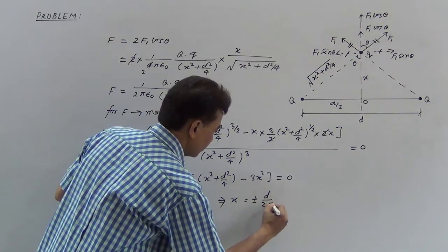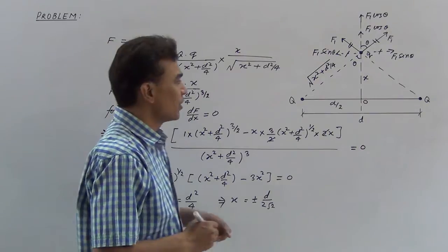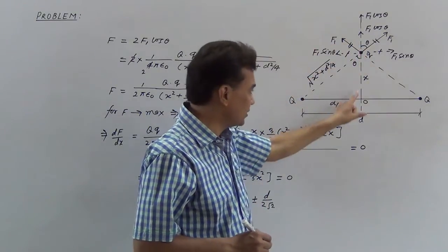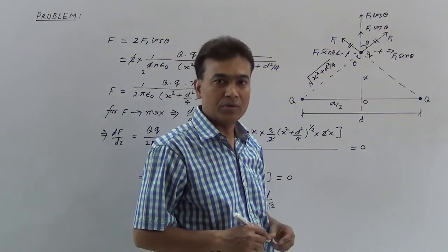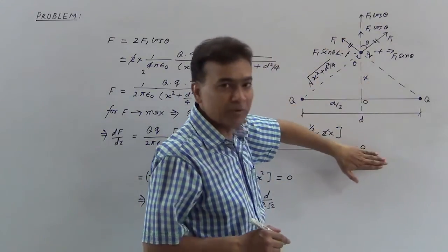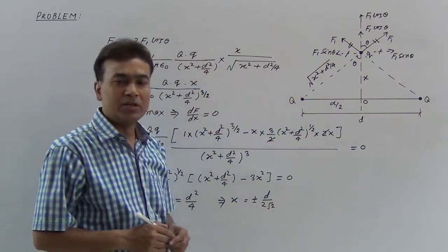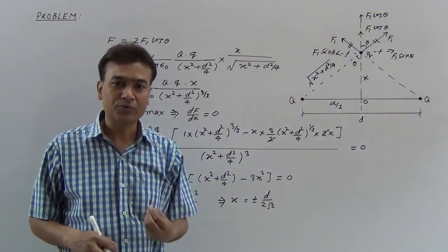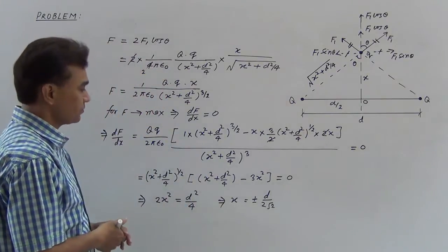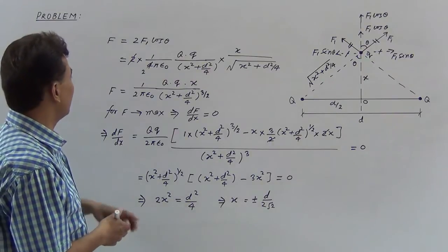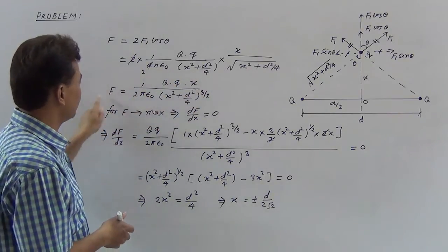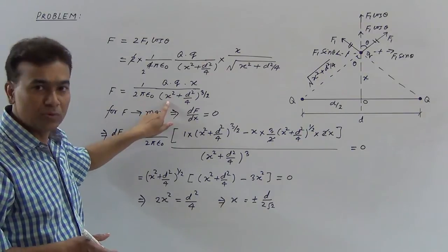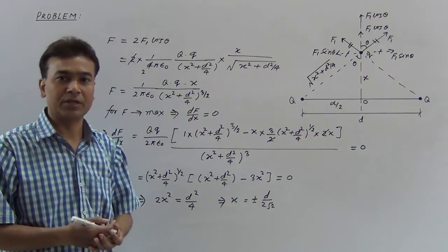Therefore x² = d²/8, which gives x = d/(2√2). Since we are on the perpendicular bisector, we choose the positive value: x = d/(2√2). Now substitute this value back into the net force expression to calculate the maximum force.